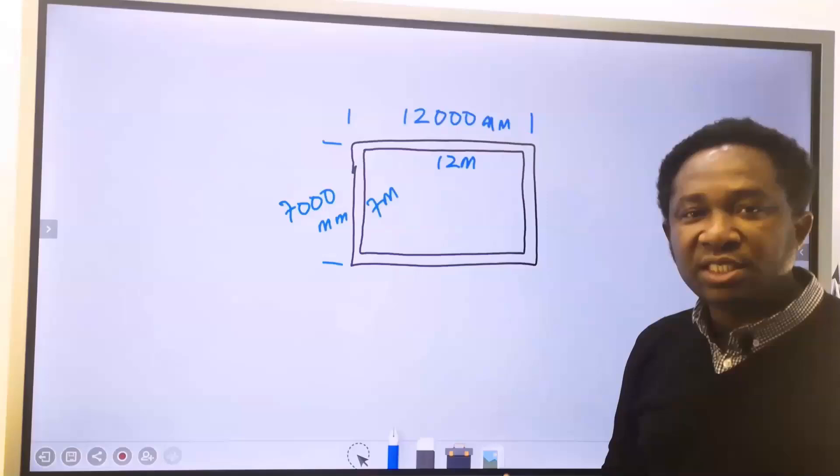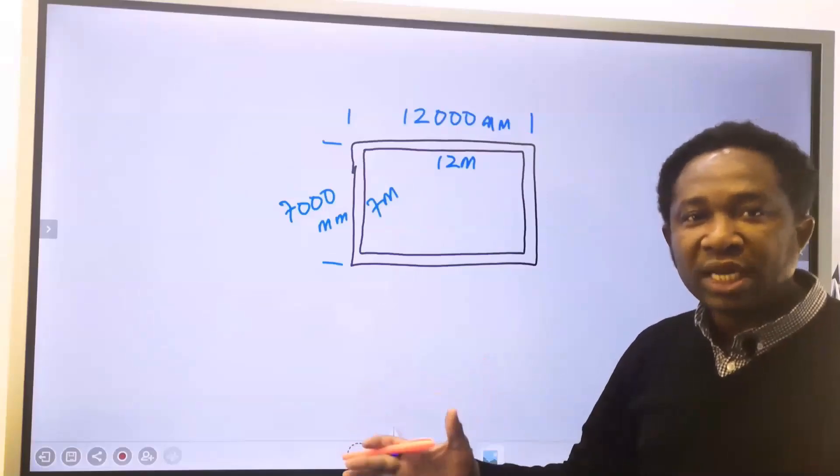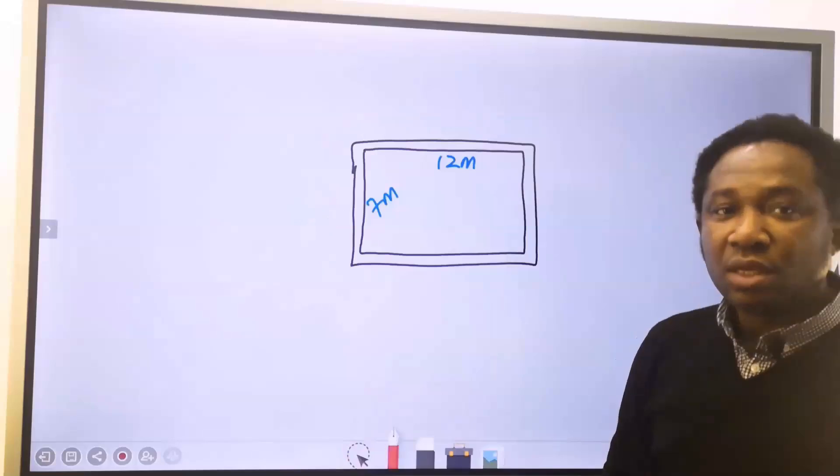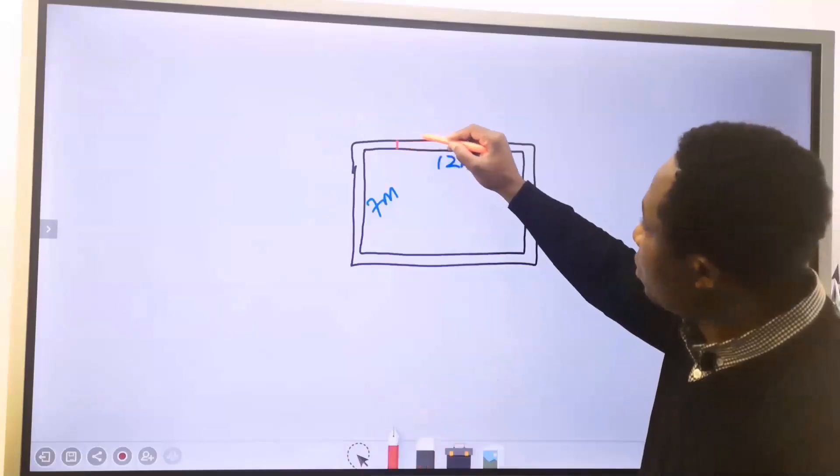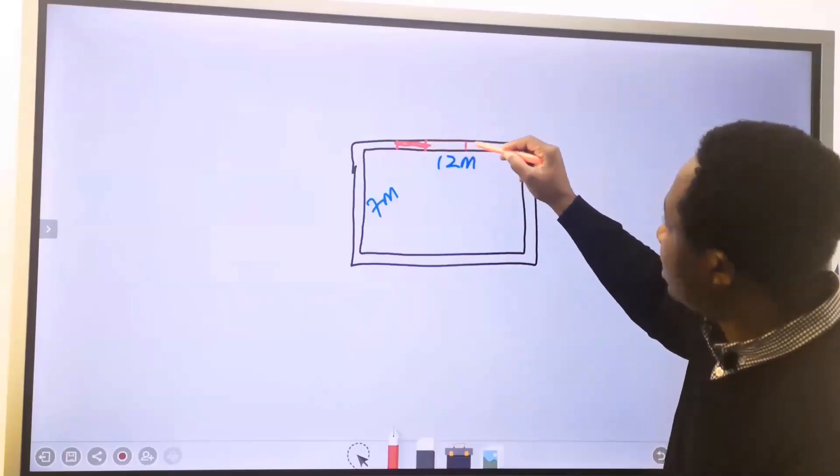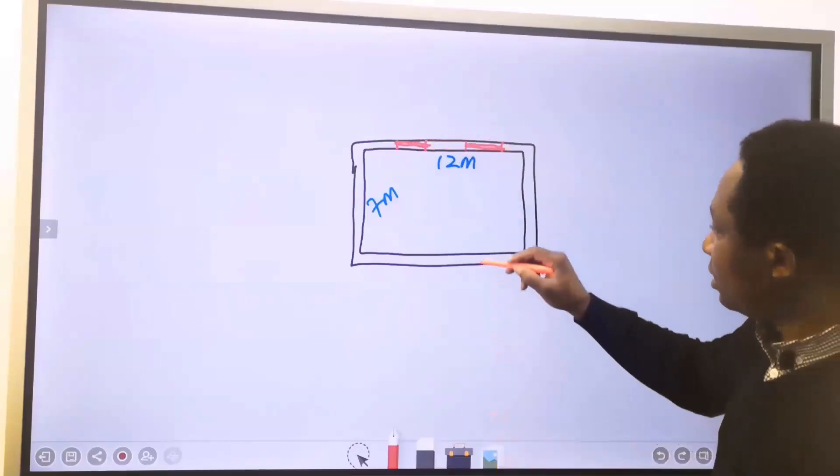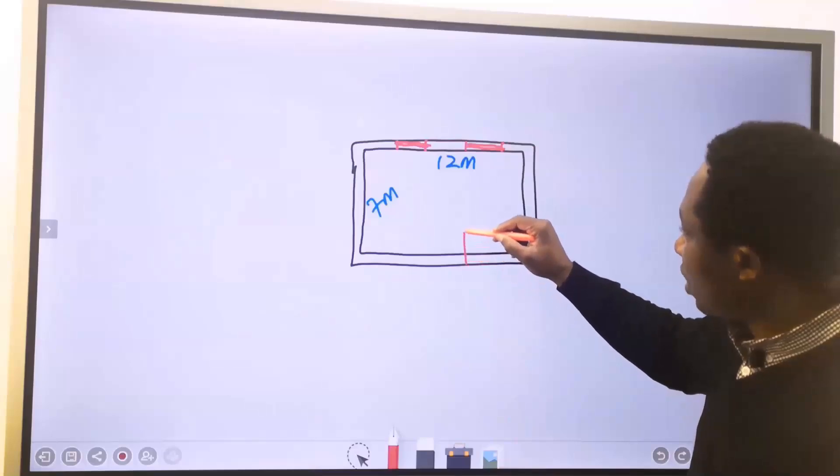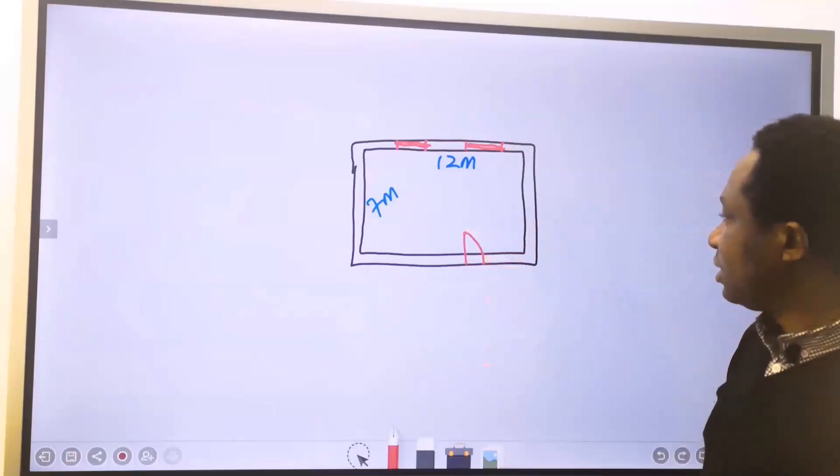This is the space proposed for this building on that land site. Next, we are proposing to have two windows on this side, and we are proposing to have a door on this side.